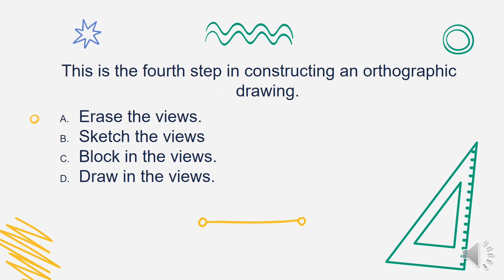What is the fourth step in constructing an orthographic drawing? Is it A. Erase the views, B. Sketch the views, C. Block in the views, or D. Draw in the views? The answer is Letter C. Block in the views.